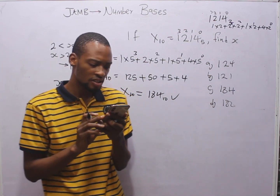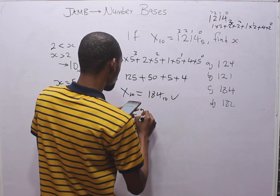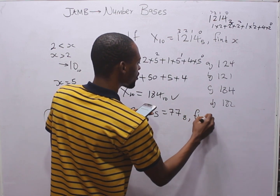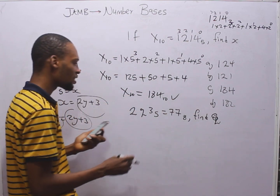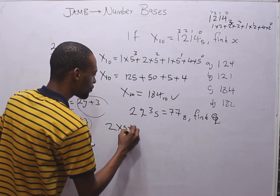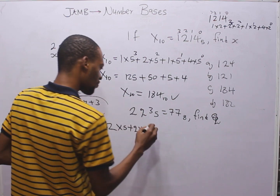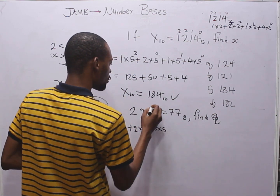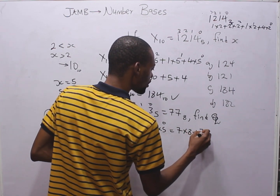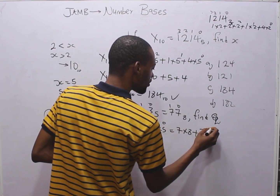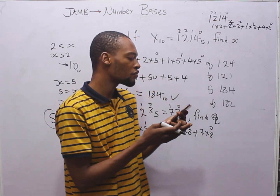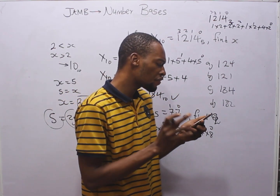In case you see a similar question like: 2q3 base 5 equals 77 base 8, find q. What you do is convert both sides to base 10. The left side becomes 2 times 5² + q times 5¹ + 3 times 5⁰, and the right side becomes 7 times 8¹ + 7 times 8⁰. Once you solve this and make q the subject of the formula, you get the value of q.